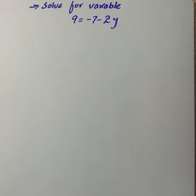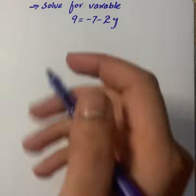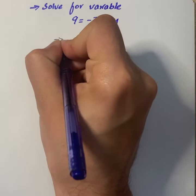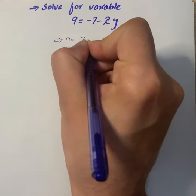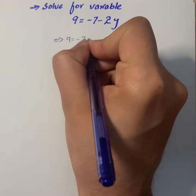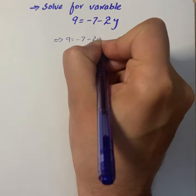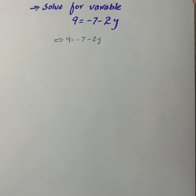The equation says solve for variable, so the variable over here is y. So first of all we will write the equation as it is: 9 equals minus 7 minus 2y.